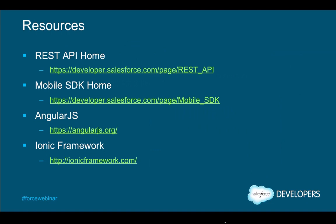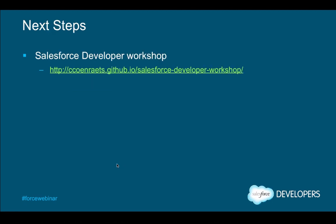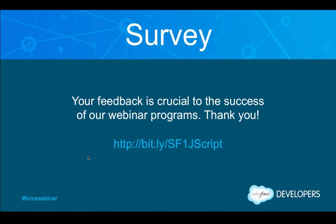In terms of resources: knowing the REST APIs will help depending on the architecture you choose — I put the REST API home page on the developer website. If you want to build hybrid apps, the mobile SDK is what you're looking for. If you're interested in Angular and the Ionic framework, I put the information there as well. As a next step, I'm in the process of finalizing a workshop that will take you through all the steps for creating applications like these. This is early access just for you — I would be really interested in your feedback.